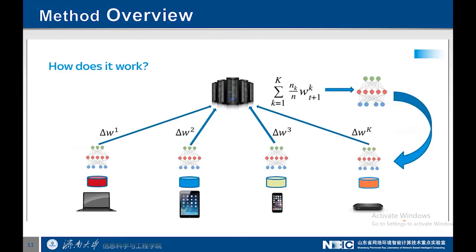The overall goal of federated learning is to enable mobile phones to collaboratively learn a shared prediction model while keeping all training data on the device, by bringing model training to the device as well. The device downloads the current model, improves it by learning from data on the device, and then summarizes the changes as a small focused update.